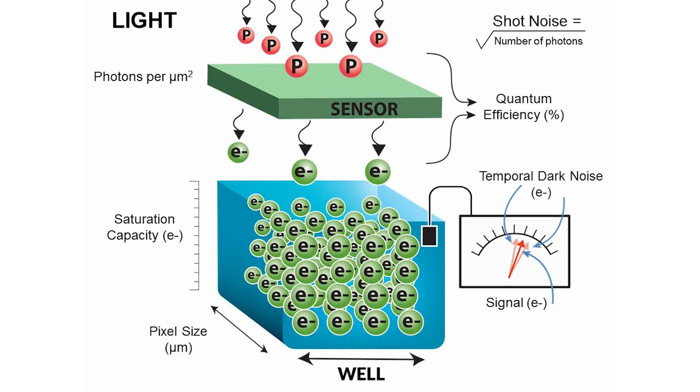We have something that in the EMVA 1288 is called temporal dark noise, but a lot of people call this read noise as well.